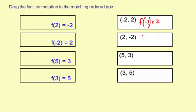The next one, the input is 2, so the 2 goes in here in the parentheses. And the output is negative 2, so negative 2 there.